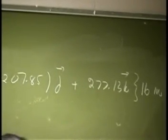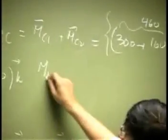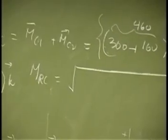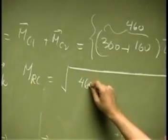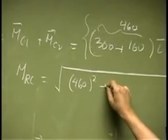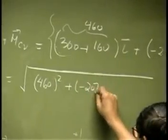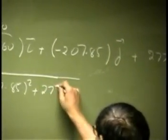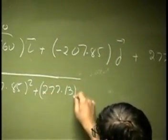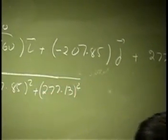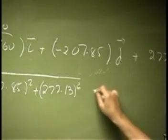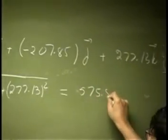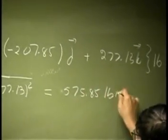Then you need the magnitude, you need MRC. That's the square root of the x component is 460 square, negative 207.85 square plus 277.13k. And that all put together should be 575.85 pound inch.